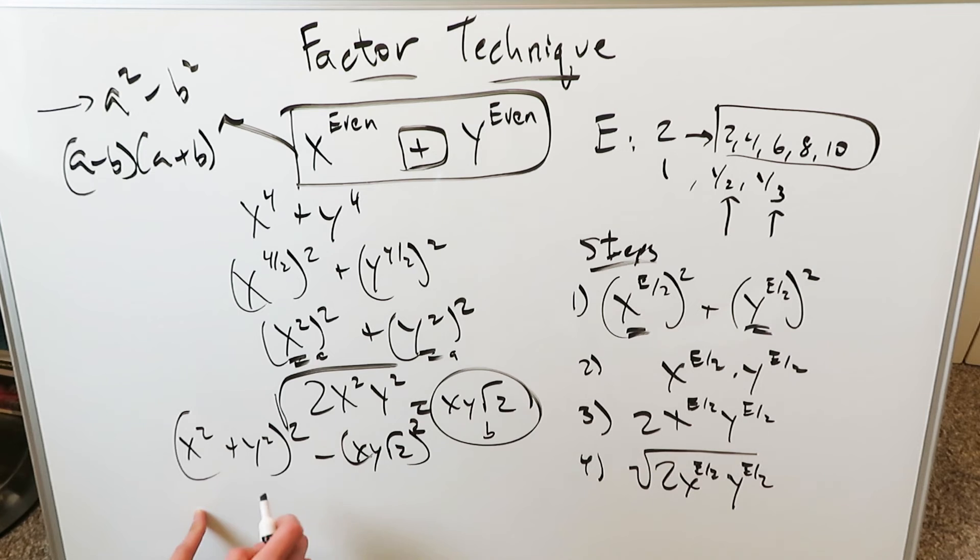Here are my a terms. Here's my b term, and write it a minus b. It will be x squared plus y squared minus xy root 2. Here's my a minus b. Now, let's do a plus b, x squared plus y squared plus xy root 2. A minus b times a plus b, and we're done. A minus b times a plus b, and we're done. And these are our factors.